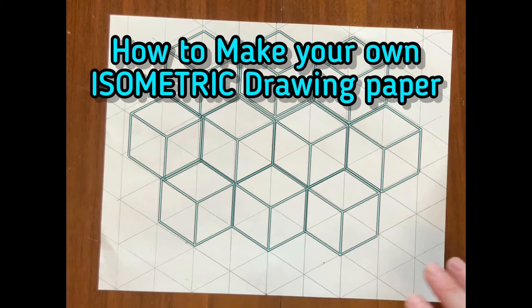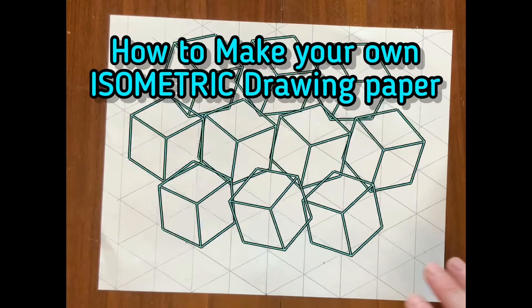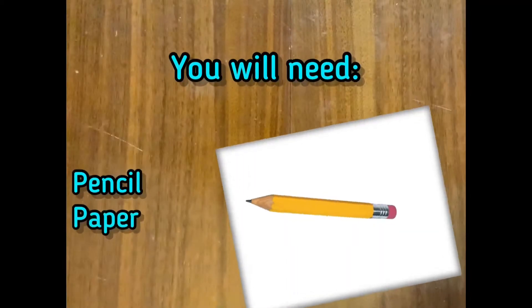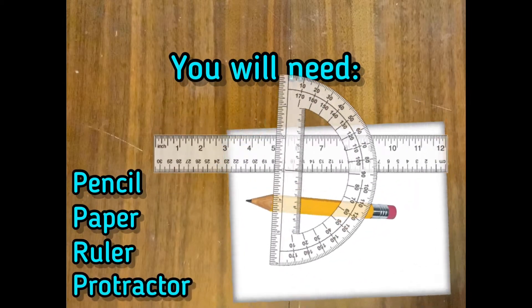How to make your own isometric drawing paper. You will need a pencil, paper, ruler, and a protractor.